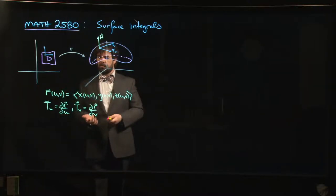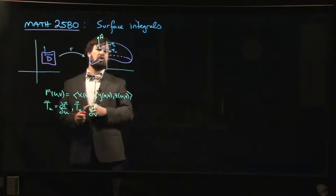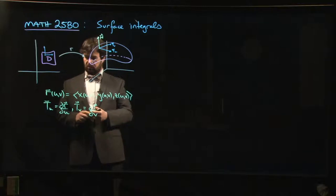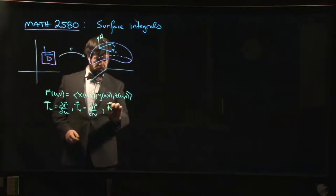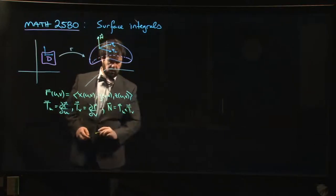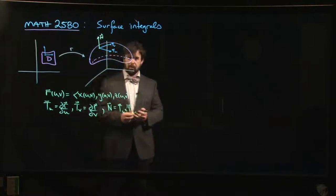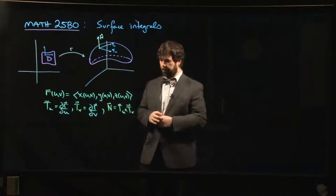The other thing that you get from this, well, there's two things you get. One is that since you have two tangent vectors, you can compute their cross-product. So the normal vector is simply the cross-product of this t sub u and t sub v. And of course, this is a vector-valued function. It depends on u and v.